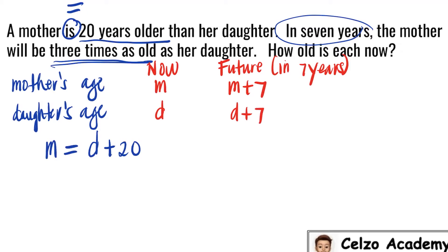The second sentence is talking about the future ages in 7 years. The word will be is also the same thing as the equal sign. In 7 years, the mother's age will be M plus 7. And it will be, so equal sign, 3 times as old as her daughter. And in 7 years, daughter's age will be D plus 7. So the second equation is M plus 7 is equal to 3 times the quantity D plus 7.